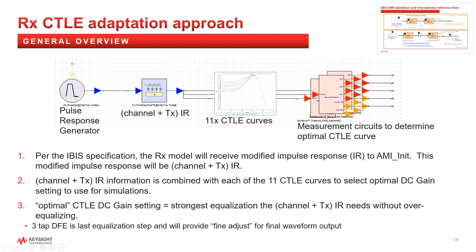A general overview is provided in this block diagram. The receiver takes the incoming channel plus transmitter impulse response and generates a pulse response. That result is combined with each of the 11 CTLE curves to select the optimal DC gain setting to use for the simulation.